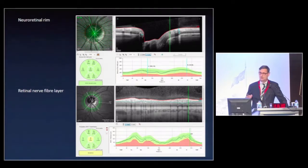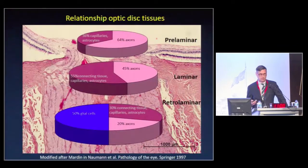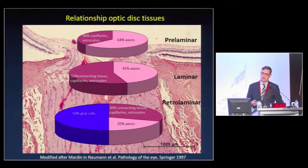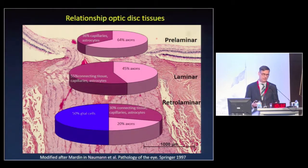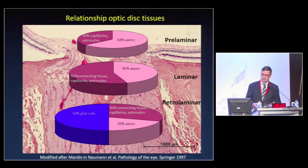Both measurements measure something related to glaucoma, but the structure they measure is completely different. When you look at the surface of the optic disc histologically, 64% of the volume is covered by axons — we want to measure axon loss. But 36% of this tissue is composed of capillaries and astrocytes, which also decline in the course of glaucoma disease, but to a different extent than the retinal nerve fiber layer. Also, the optic disc has a large variability concerning its size and shape, so every measurement at the optic disc area is subject to very large biological noise.